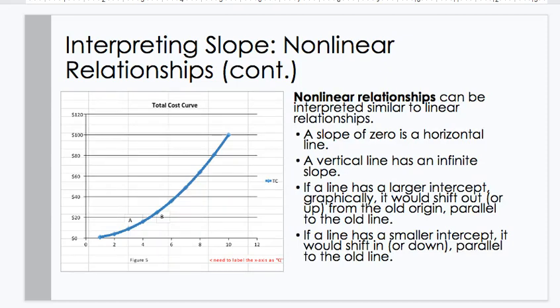Interpreting slope continued. Nonlinear relationships can be interpreted similar to linear relationships. A slope of 0 is a horizontal line. A vertical line has an infinite slope. If a line has a larger intercept graphically, it would shift out or up from the old origin, parallel to the old line. If a line has a smaller intercept, it would shift in or down, parallel to the old line.